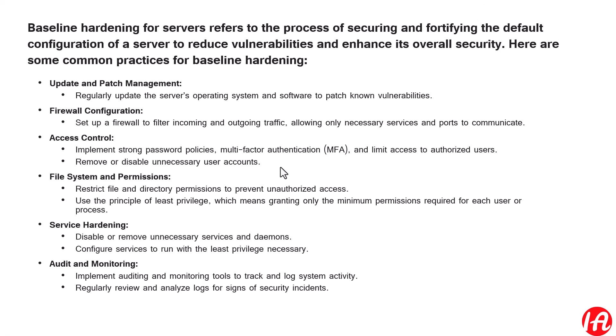For firewall configurations, you have to set up a firewall to filter incoming and outgoing traffic. You need to determine what kind of traffic is required for the server. If any ports or IP addresses are not required, you can block them and allow only necessary services and ports to communicate over the internal or external network.